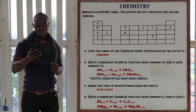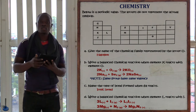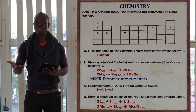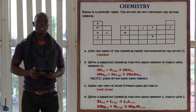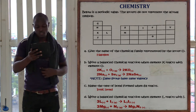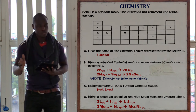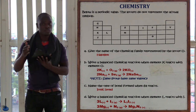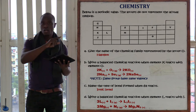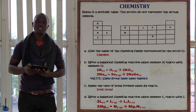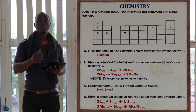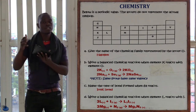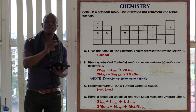The next question asks: write a balanced chemical reaction when element L reacts with element I. Element L is magnesium and element I is nitrogen, so we are finding the product of magnesium reacting with nitrogen. The product is L3I2. The valency of L (magnesium, atomic number 12, configuration 2,8,2) is +2 because it loses 2 electrons to become stable. Therefore the valency of L is positive 2.